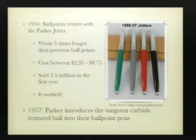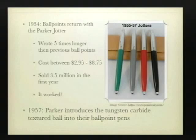1951: the fountain pen really temporarily died because of real quality issues. 1954: the ballpoint pen came out in big force with the Parker Jotter. Prices again dropped. At this point, we start to see the Bic Pen Company overtake pen manufacturers, showing the rise of the ballpoint pen over the fountain pen. We had things such as the modern felt tip pen being introduced, and the pressurized space pen.